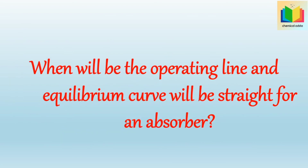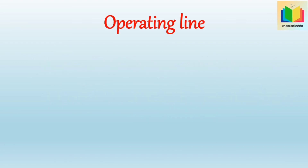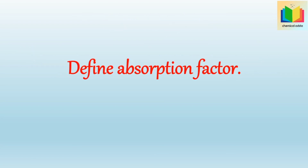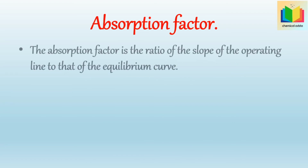When will both the operating line and equilibrium curve be straight for an absorber? In an absorber, both the equilibrium curve and the operating line will be straight for dilute solutions and non-isothermal operation. Define absorption factor: the absorption factor A is the ratio of the slope of the operating line to that of the equilibrium curve, denoted by A, where A = L / (M × G).